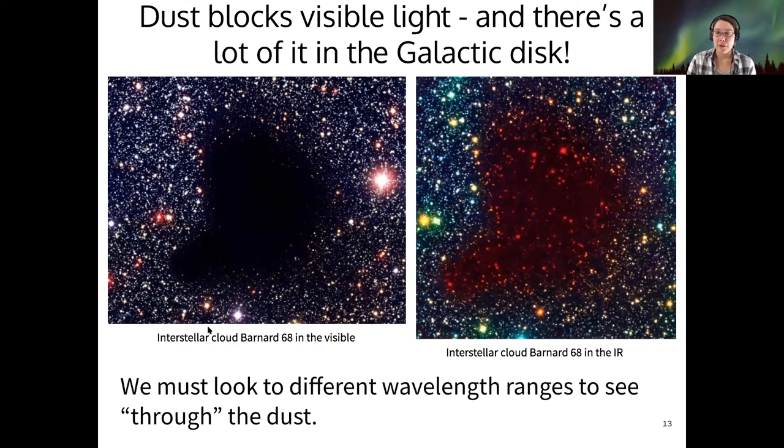So if we look in different wavelength ranges, then it can actually permeate the dust. Whereas visible light is absorbed, infrared light can actually transmit through dust clouds. And also longer wavelength light, such as radio, can as well.